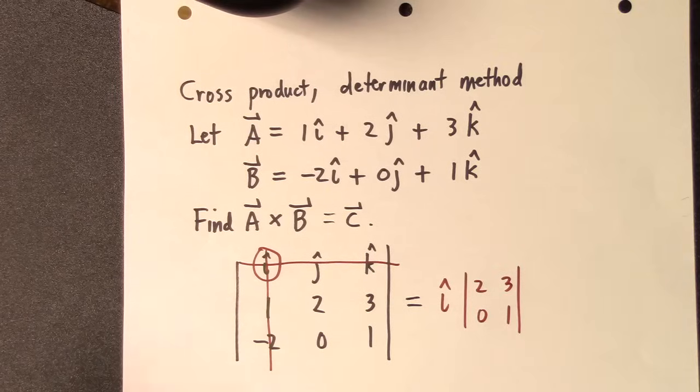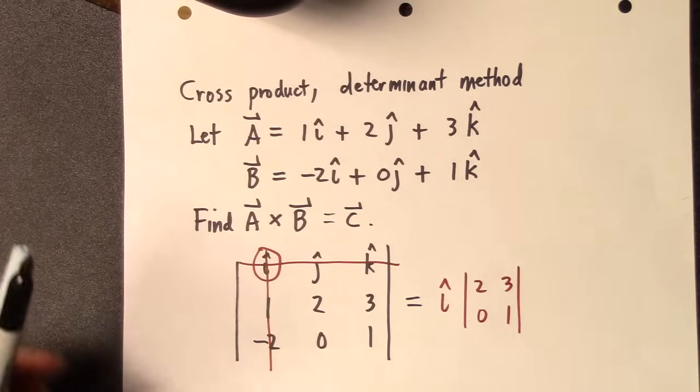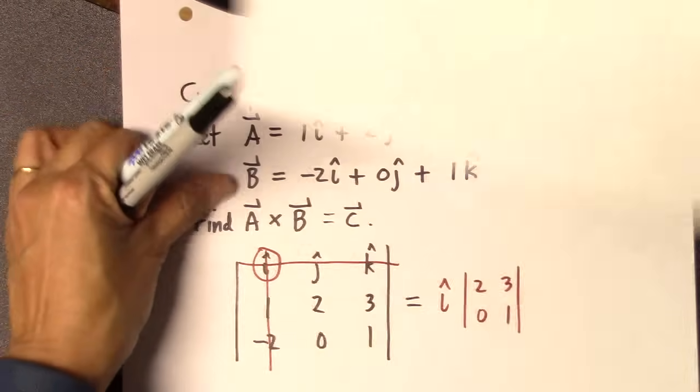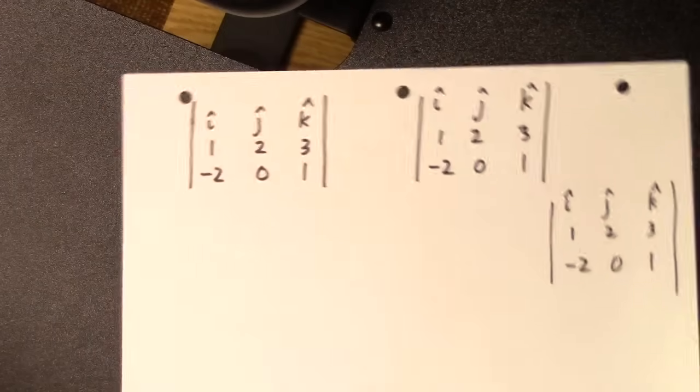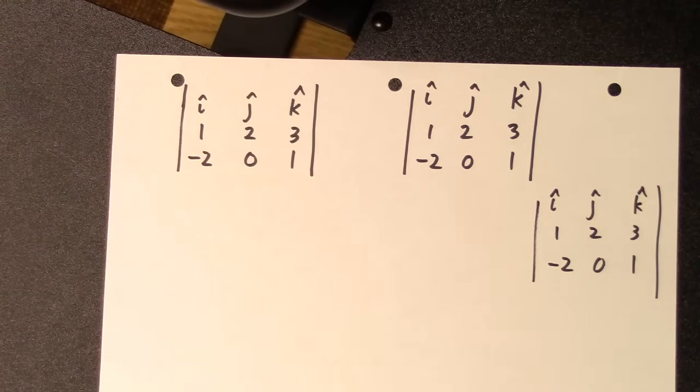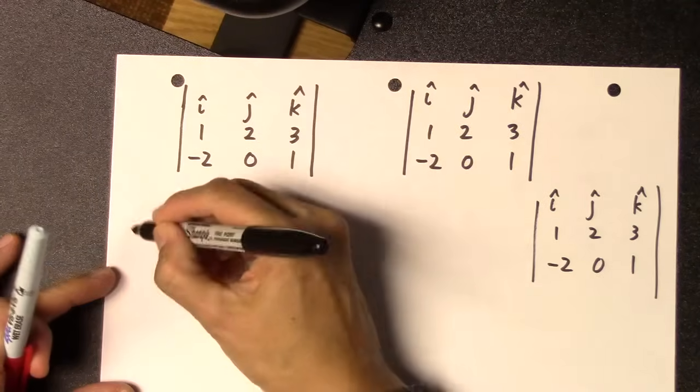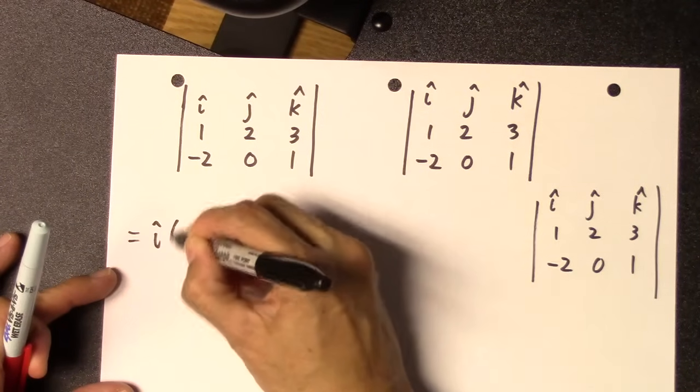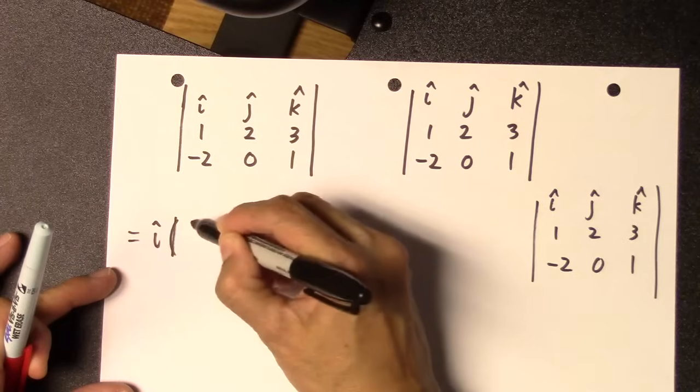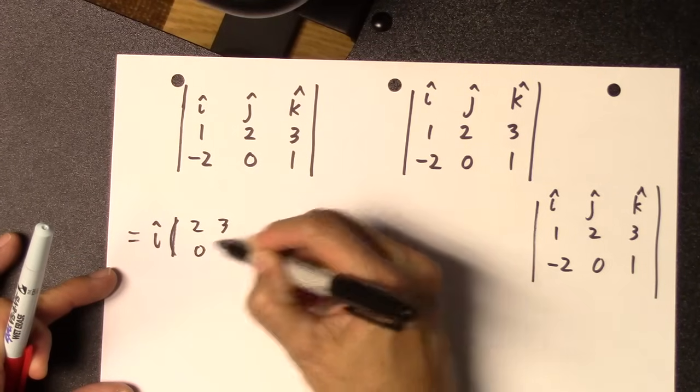Okay, then the next thing you have to do is figure out what to do with the j hat. I have to go to another paper here because it's getting crowded. So here you go, let me rewrite the i hat part of it. Okay, so it's going to equal i hat times 2, 3, 0, 1, like this.